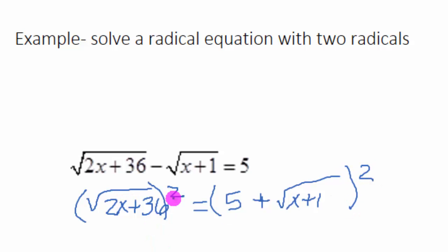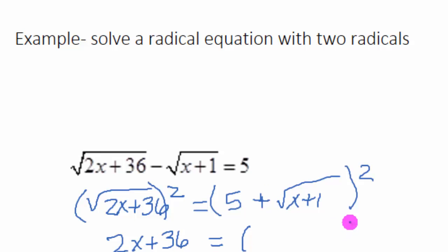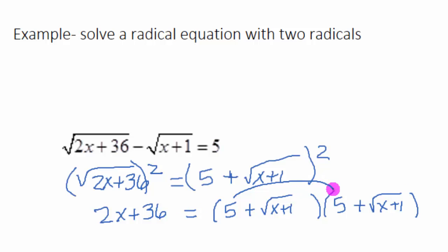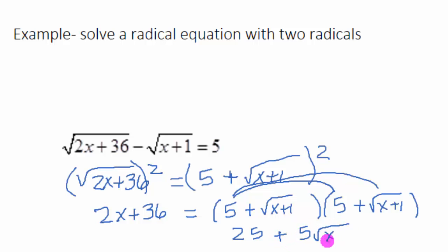When we square a square root, they undo each other, and you have 2x plus 36 — squaring a square root. These are inverse functions, so they undo each other and you get what you started out with. But over here we have two terms, so we are going to have to FOIL. Write this twice so you can use first, outer, inner, and last. So first, multiply 5 times 5 = 25. Then for the outers, the 5 goes in front of the square root of x plus 1. Then the inners give another 5 times the square root of x plus 1.